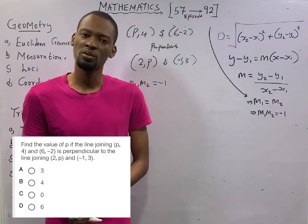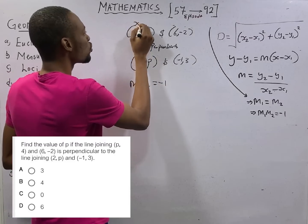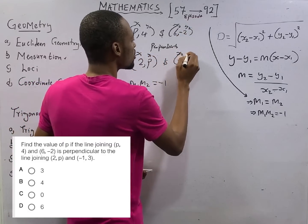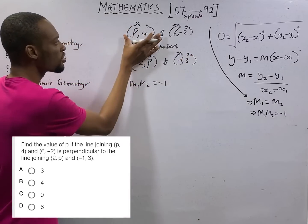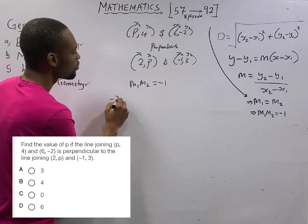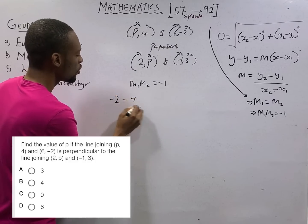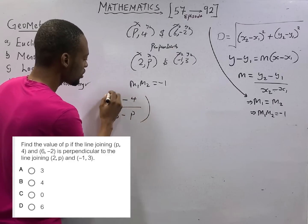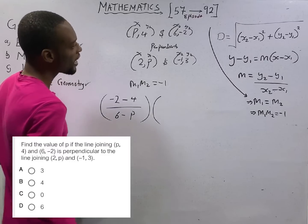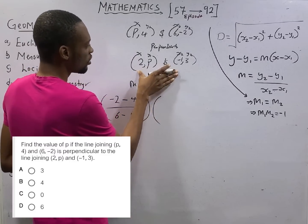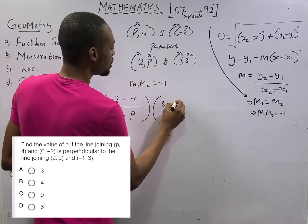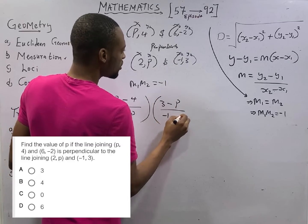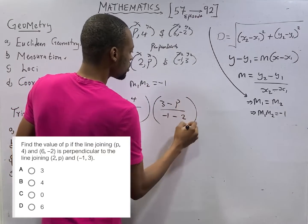Once you multiply their gradient, you get minus 1. Or the gradient of one line is minus 1 divided by the gradient of the second line. Let's look for the gradient of the lines and multiply and equate to minus 1. With that, we should be able to get the value of p. From this one, this is x1, this is y1, x2, y2. So m1, the first gradient is (y2 minus y1, minus 2 minus 4) over (x2, 6 minus x1, p). For the second line now, y2 is 3 minus y1, p over (x2 minus 1 minus x1, 2). This is equal to minus 1.